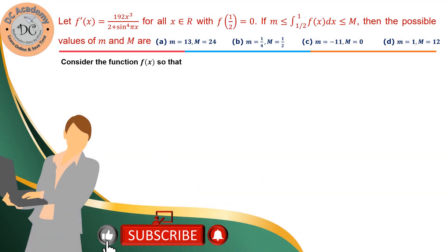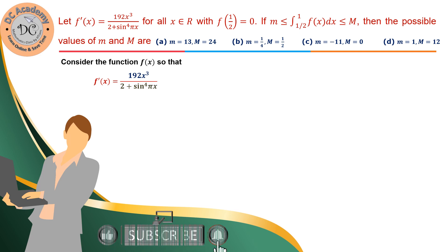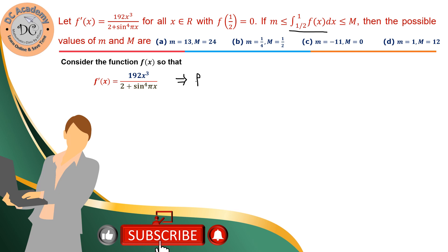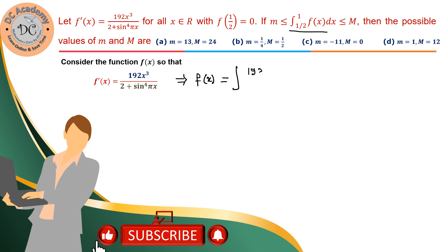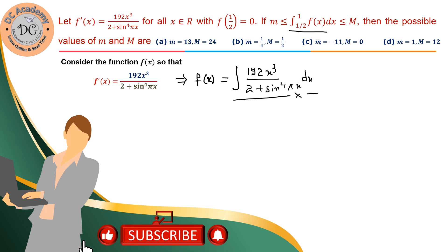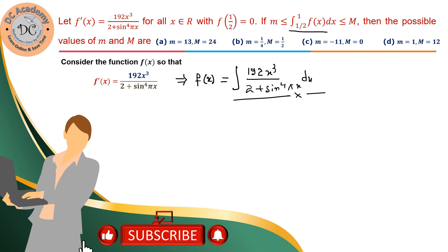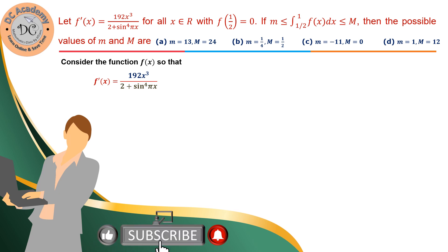First we consider the function f(x). Since f'(x) is given, we can see that f(x) = integral of 192x³ / (2 + sin⁴πx). However, it is quite difficult to perform this integration directly. That's why we analyze the function to see if we can get something useful out of f'(x).